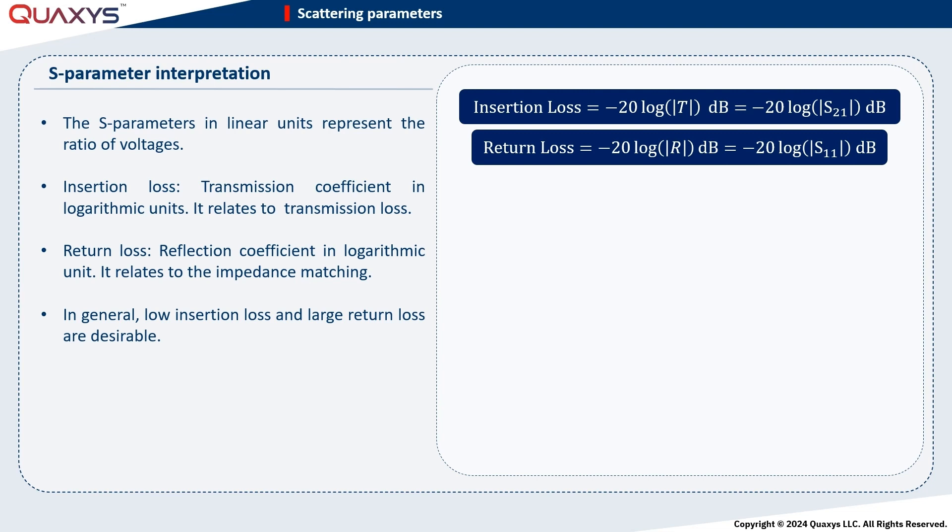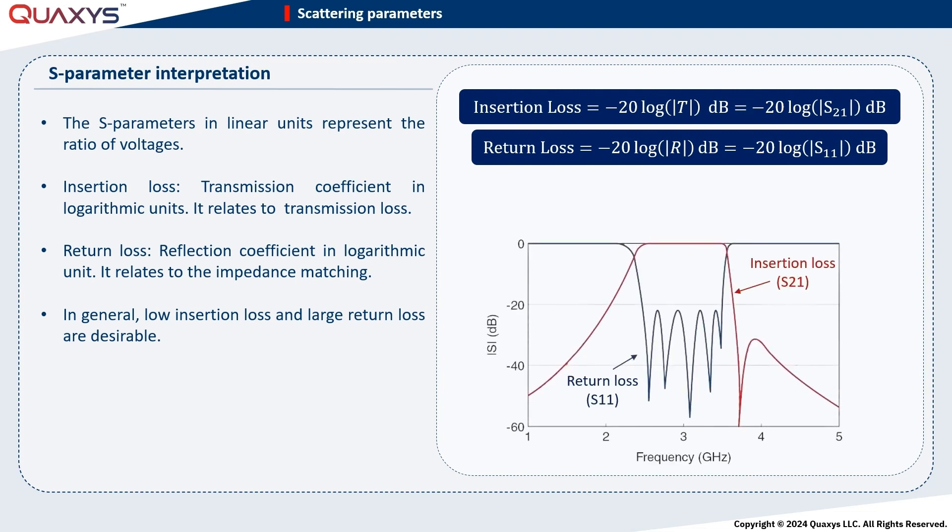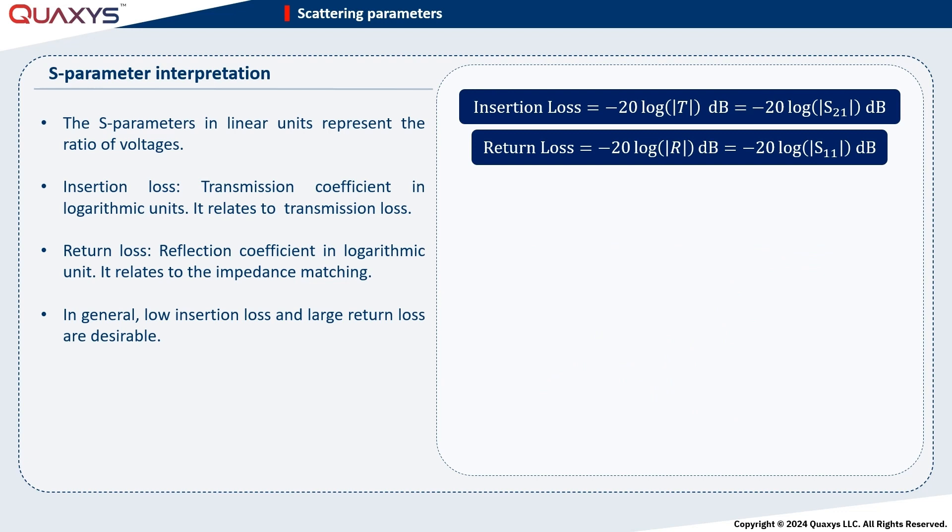For example, in this band pass filter, over the passband, the return loss is larger than 20 dB, and insertion loss is very small, around 0.3 dB. There is a key difference between S-parameters in linear units and logarithmic units. As mentioned earlier, S-parameters in linear units relate to the ratio of voltages, while S-parameters in logarithmic units relate to power. This is why, in link budget calculations, gain and insertion loss values are added to or subtracted from power values.